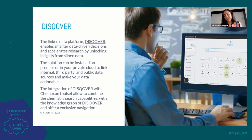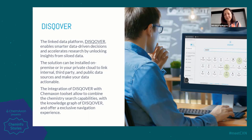The platform will allow you to perform a search across all this information at the same time. The integration of Discover with the KMAXON toolset allows combining the chemistry search capabilities with the linked data and the knowledge graph of Discover, offering an exclusive navigation experience. I will illustrate that with a use case where I'm working on a compound at early discovery research, and I would like to know if there is some information known about my compound in the public area — if there are similar compounds that have already been tested in clinical trials, or if there are publications around these compounds.